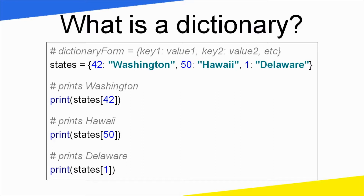That's why there is a difference from a list. Now, states equals a dictionary with curly braces. Here the key 42 is assigned to Washington, and the key 15 is assigned to Hawaii. To access a value, we print states with square brackets and a key — for example, states[42] prints Washington, states[15] prints Hawaii, and states[1] prints Delaware.